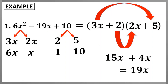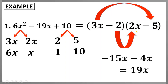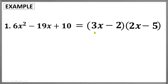But we need negative 19x. Since we only missed the sign, we will manipulate the operations of our binomial factors. The factors of positive 10 can also be negative 2 and negative 5, so let's try those. We will have 3x minus 2 and 2x minus 5. Multiplying the outer terms gives negative 15x. For the inner terms, negative 2 times 2x gives negative 4x. The sum is now negative 19x. Since we already got the correct middle term, the correct factors are the quantity 3x minus 2 times the quantity 2x minus 5, which equals 6x squared minus 19x plus 10.